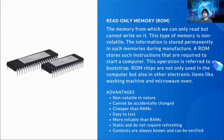What are the different advantages of ROM? It is non-volatile in nature, meaning the data or instructions will not get erased when your computer is turned off or there is a power failure. It cannot be accidentally changed. It is cheaper than RAM. It is easy to test. It is more reliable than RAM. It is static and does not require refreshing. Contents are always known and can be verified.